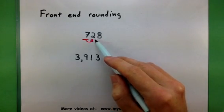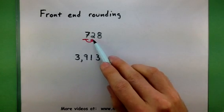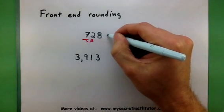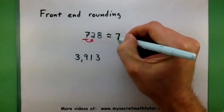Remember that if this number is 4 or lower, we'll keep it as a 7. But if it is 5 or higher, then we'll make that 7 an 8. All right? Well, since it's just a 2, that's 4 or lower, we will leave the 7 just as it is.